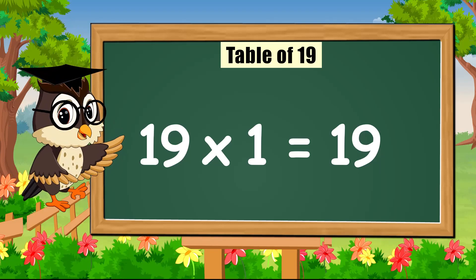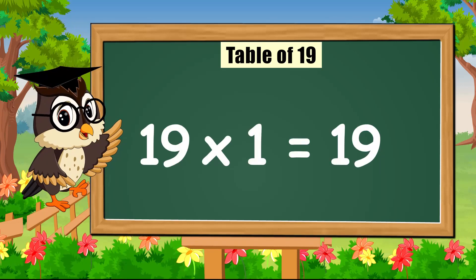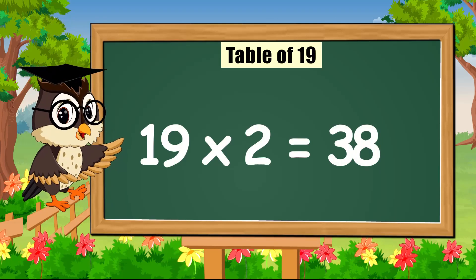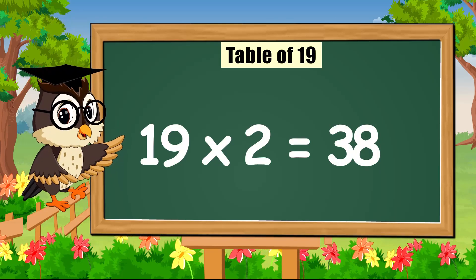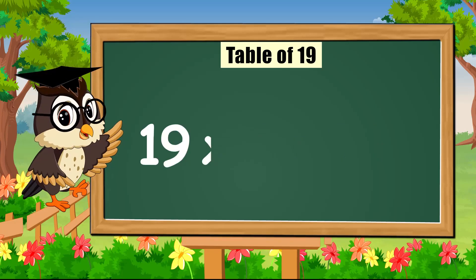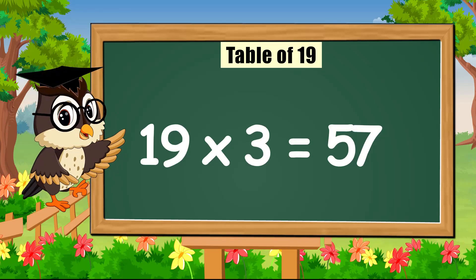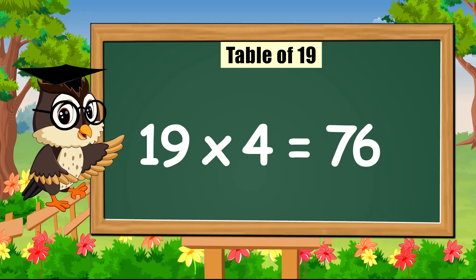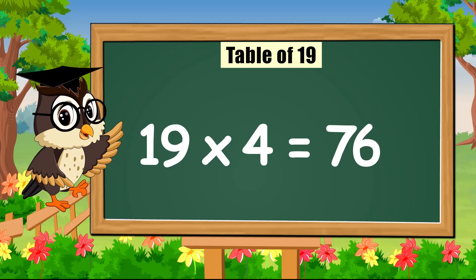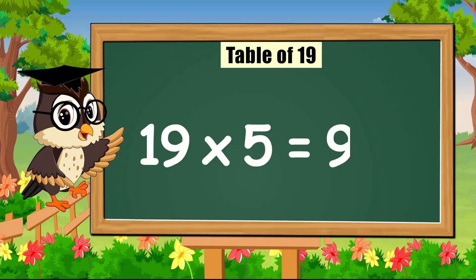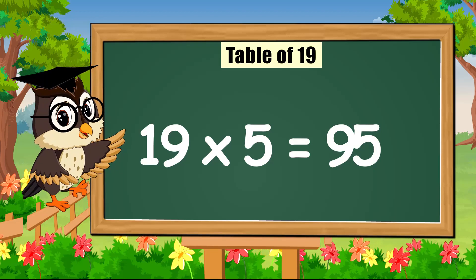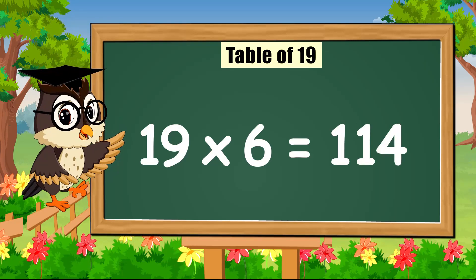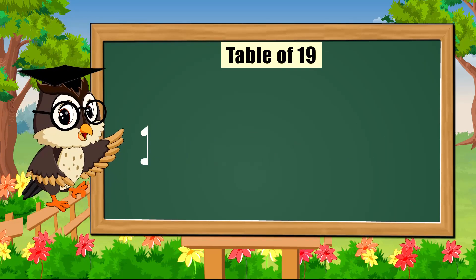19 times 1 is 19. 19 times 2 is 38. 19 times 3 is 57. 19 times 4 is 76. 19 times 5 is 95. 19 times 6 is 114.